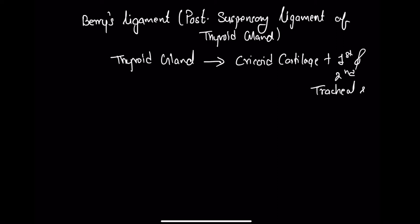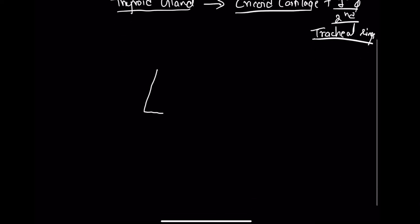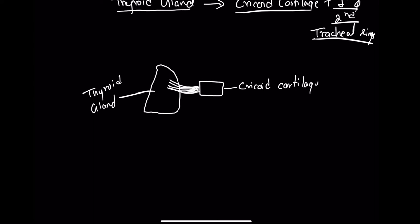Berry's ligament connects the thyroid gland with the cricoid cartilage and the first and second tracheal rings. Let's suppose this is the thyroid gland here - Berry's ligament connects the posterior medial part of the thyroid gland to the cricoid cartilage. The thyroid gland in the neck is suspended above by this ligament, which is connected to the hyoid bone.